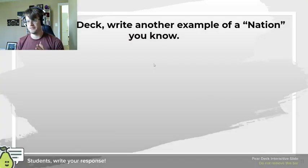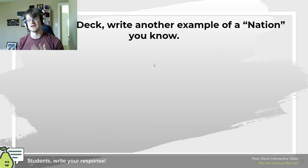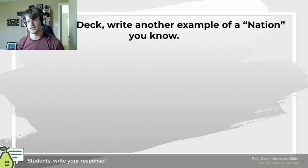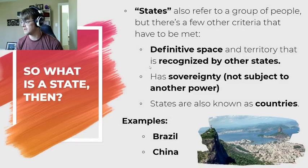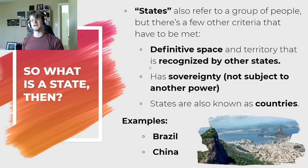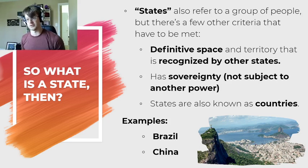Now that you know the definition of a nation, write another example of a nation that you might know — go ahead and do that on Pear Deck. Then let's talk about what a state is. A state also refers to a group of people, but there are a couple of other criteria that make something a state.